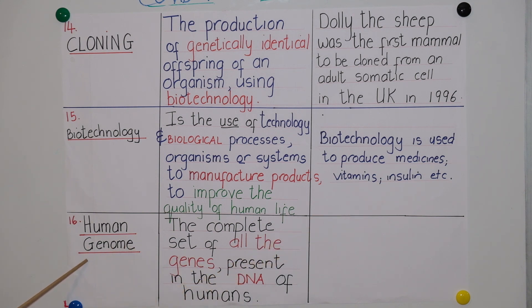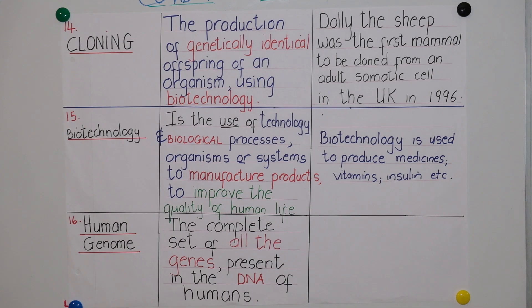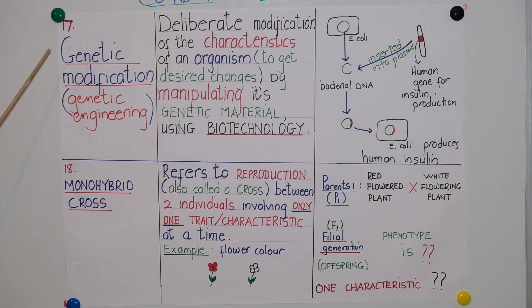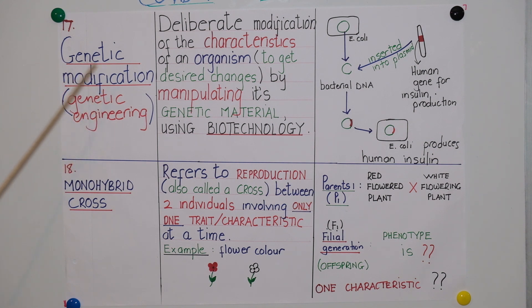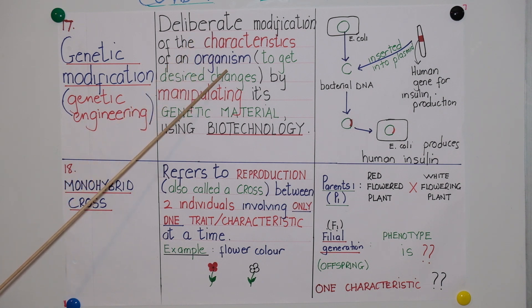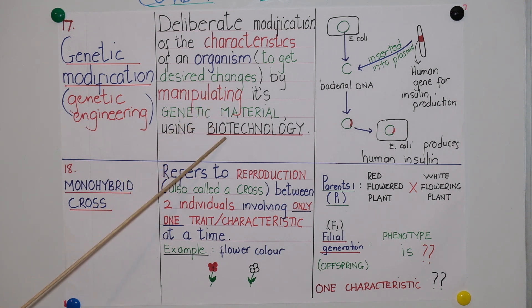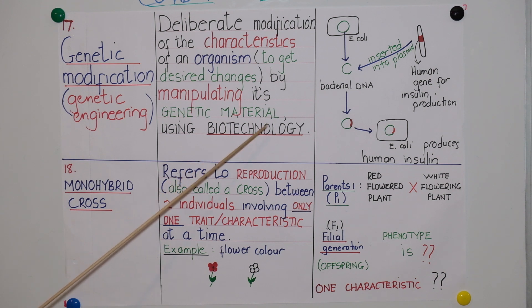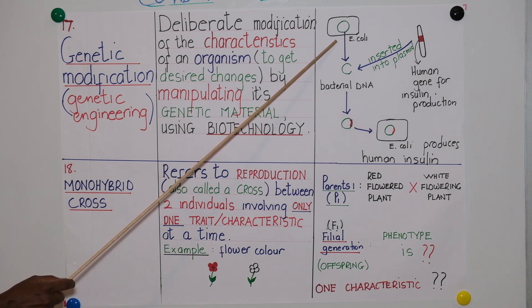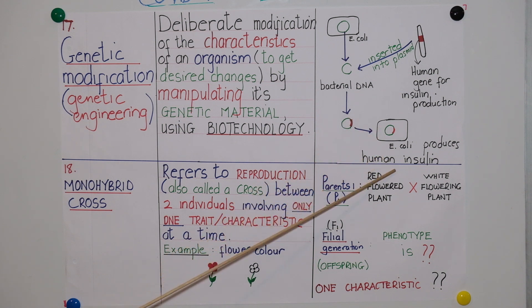The human genome is the complete set of all the genes present in all the DNA — in other words, all the chromosomes of humans. The next concept is genetic modification, or genetic engineering. Genetic modification is a deliberate modification of the characteristics of an organism to get desired changes by manipulating its genetic material using biotechnology. For example, E. coli bacteria can be genetically modified to produce human insulin.